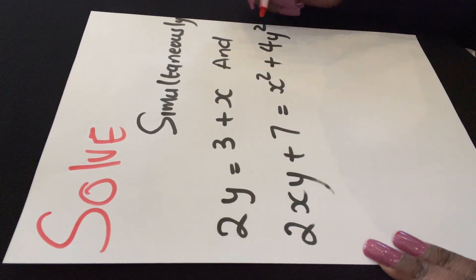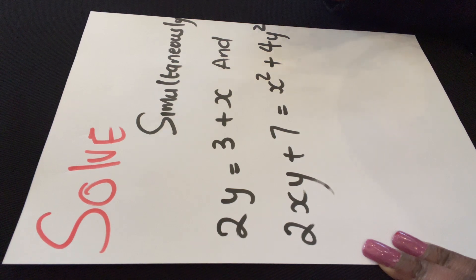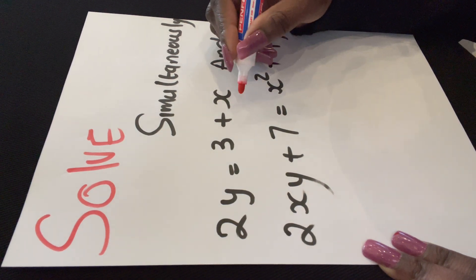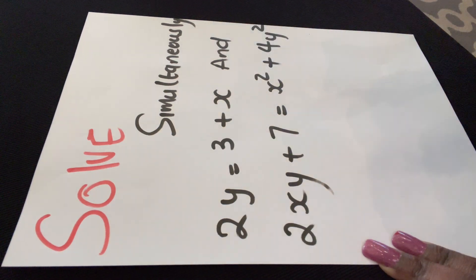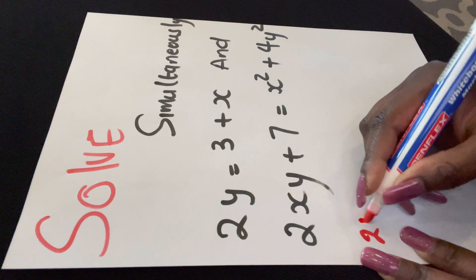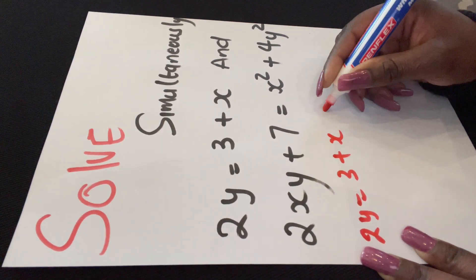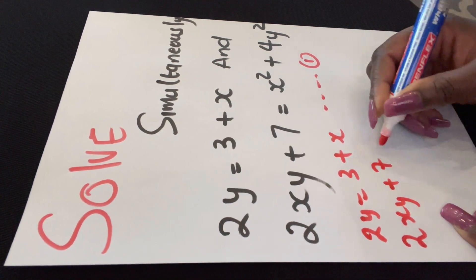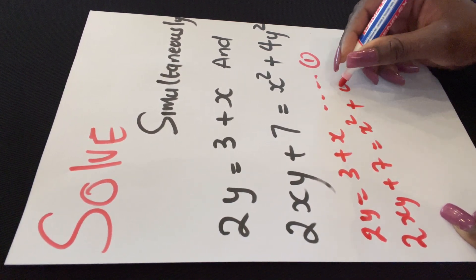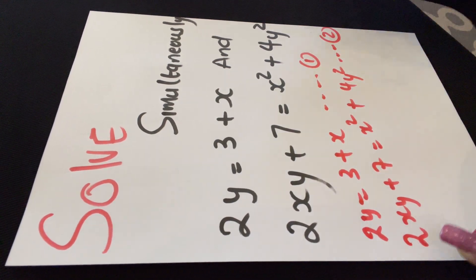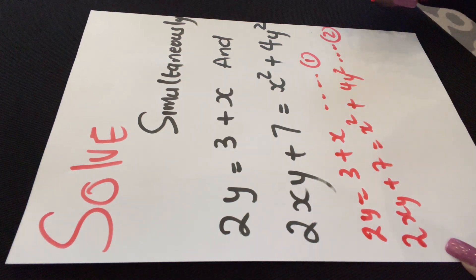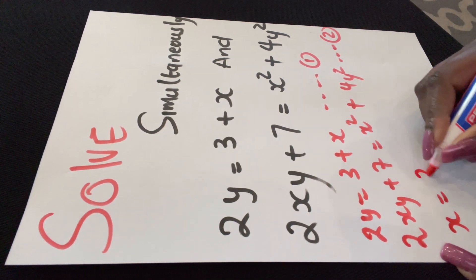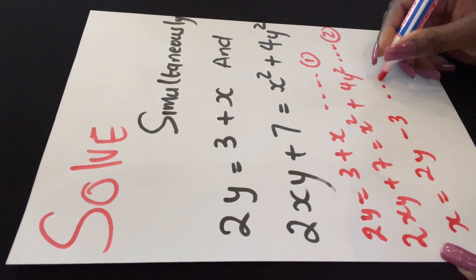I'm going to write the two equations we are given. Equation 1: 2y = 3 + x. Equation 2: 2xy + 7 = x² + 4y². Then I will write the first equation in terms of x as equation 3. Making x the subject of the formula in equation 1 gives x = 2y − 3. So this is equation 3.